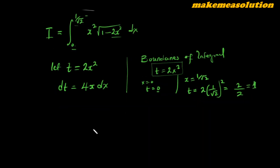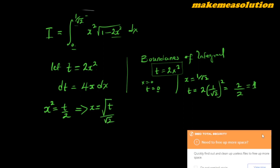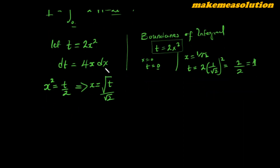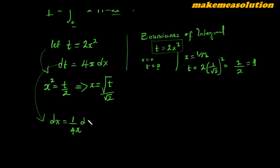Another thing is that we can make x the subject of the formula. From t equals 2x squared, x squared equals t over 2, which implies x equals the square root of t over root 2. From this, dx equals 1 over 4x dt, which is also equal to 1 over (4 times root(t) over root 2) dt.